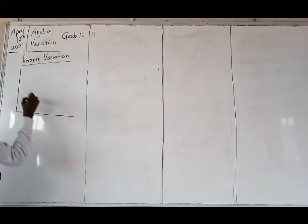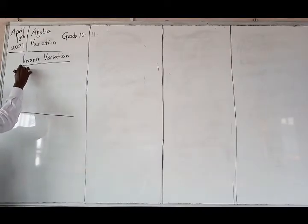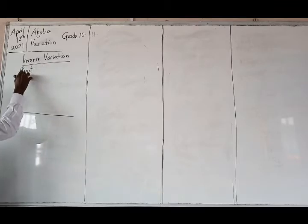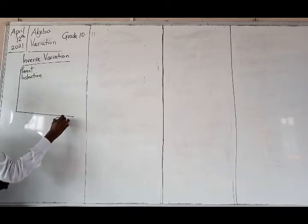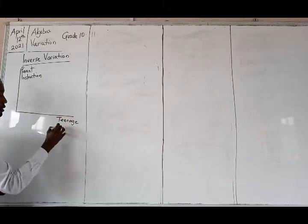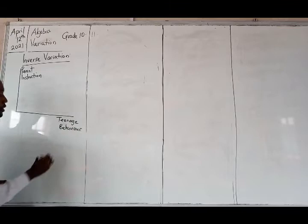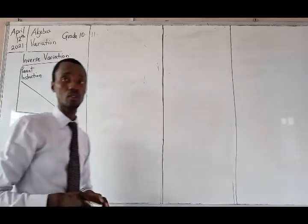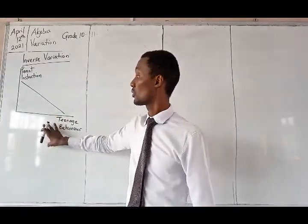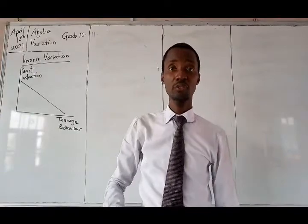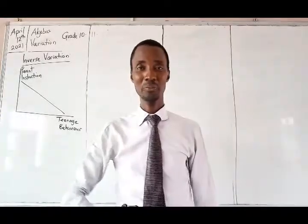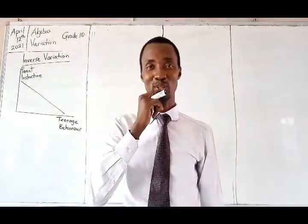Now look at this. So this is a parent's instruction, and this is what we call teenage behavior. The graph cannot go like this, it will go like this. So this is a typical example of what inverse variation is. You can't forget this one, I know, because that is how you behave.